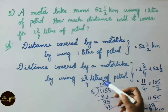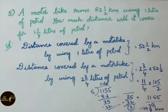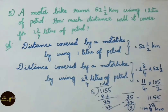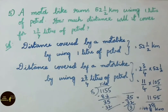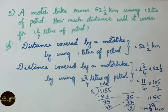By using 2 and 3 by 4 liters of petrol, the motorbike can travel a distance of 144 and 3 by 8 kilometers. Today we have seen Chapter 5, Fractions and Decimals, Exercise 5.2, sums 1 to 5. Hope you liked this video. If you like this video, please like, share with your friends, and subscribe to our channel. Thank you for watching.